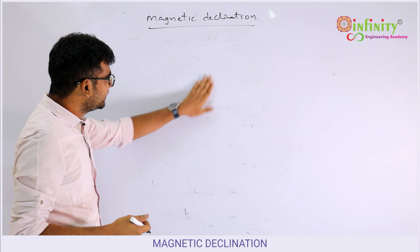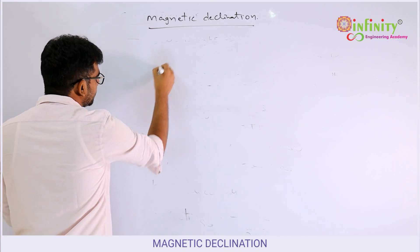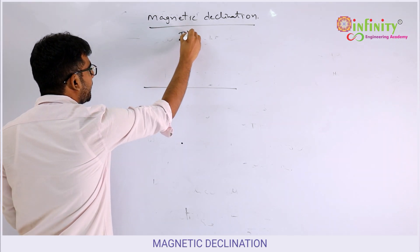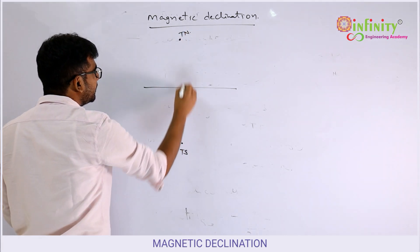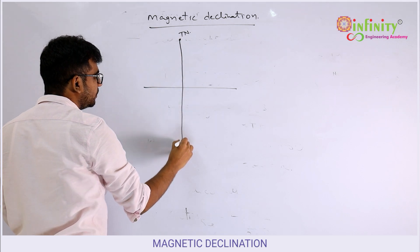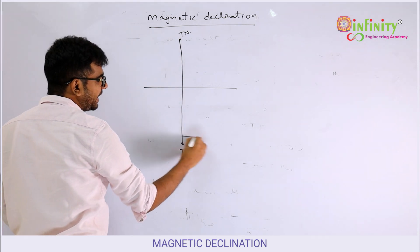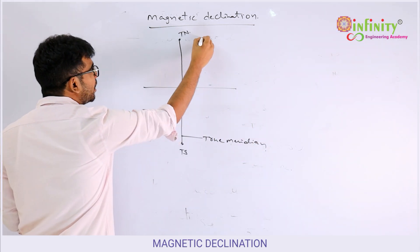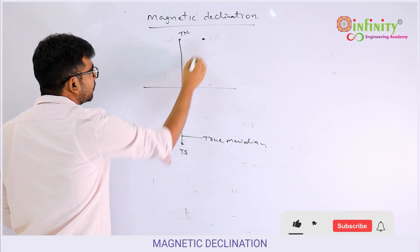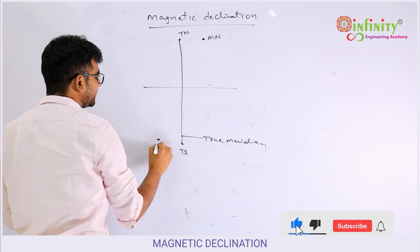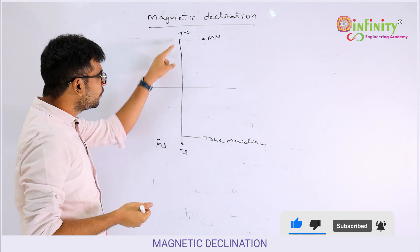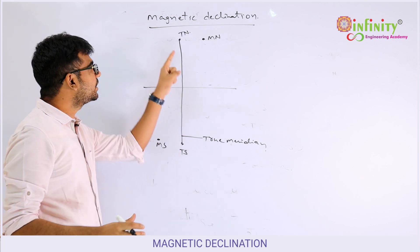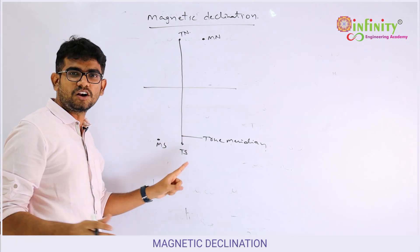So first, what is magnetic declination? Suppose if you take the Earth's surface, Earth consists of true north and true south. The line joining this true north and true south is called the true meridian. The position of true north and true south is always fixed.